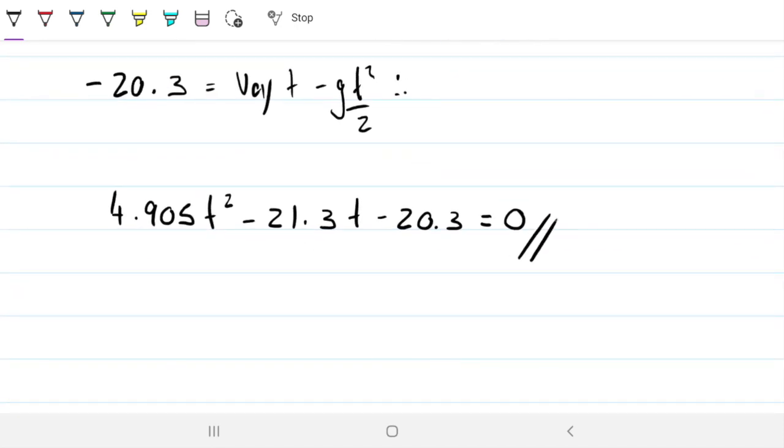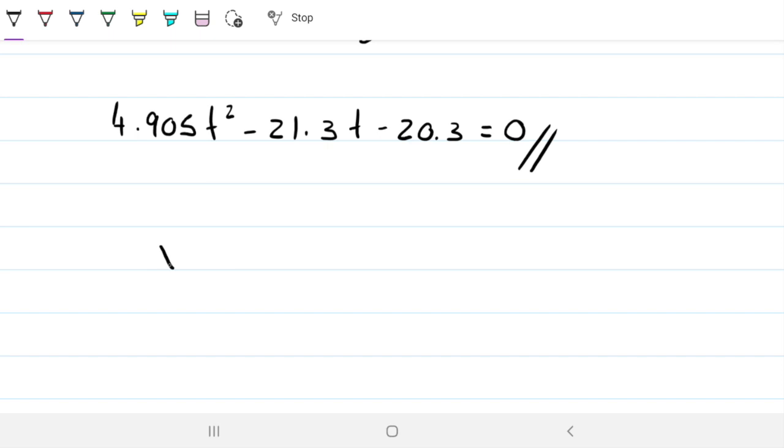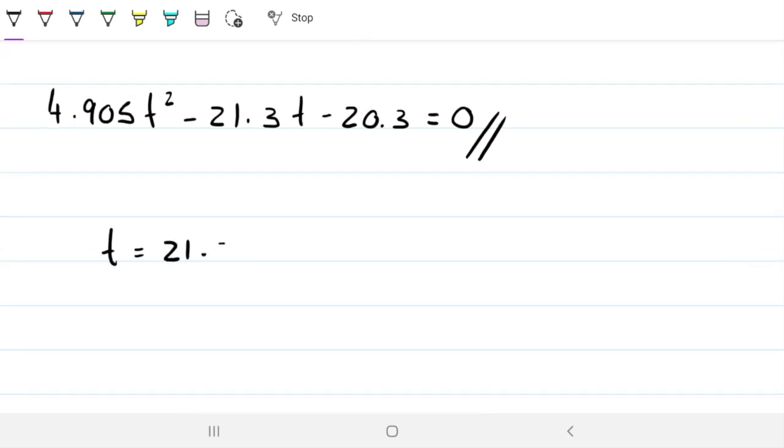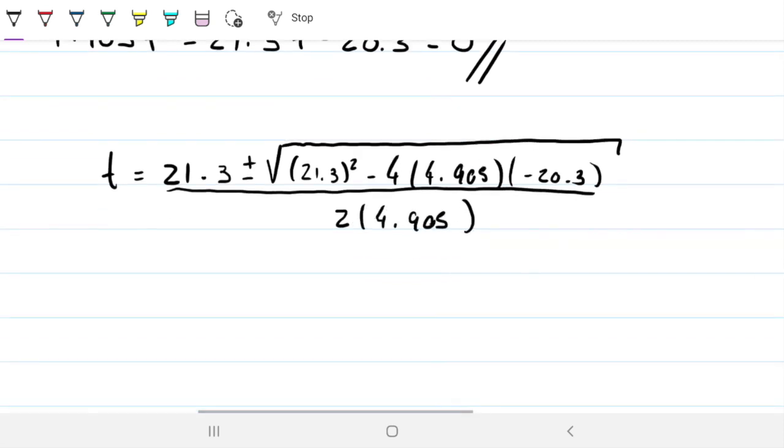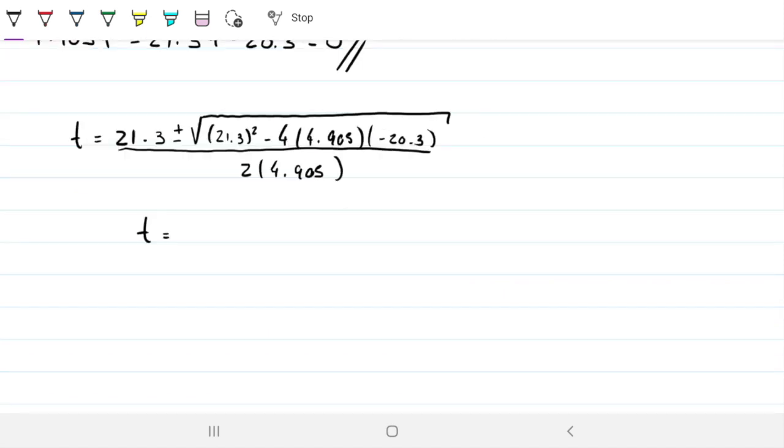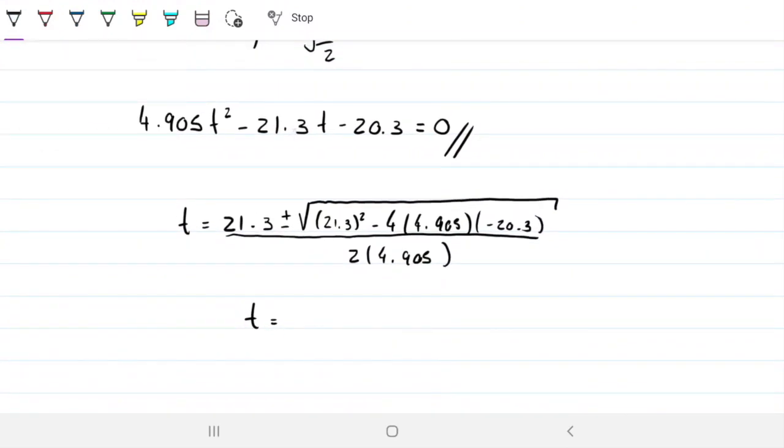And now we have a nice second degree equation that we can solve using the quadratic formula. That's not x, that's t. So minus b, 21.3 plus or minus b squared minus 4ac divided by 2a. Oops that's my mistake, 21.13, right? That's our VOY.